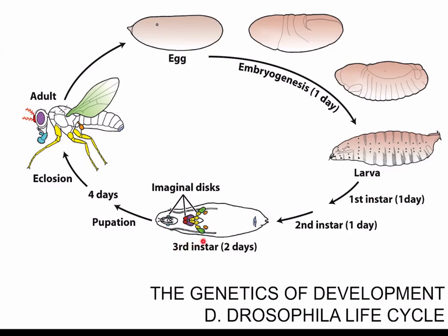Similarly, the third instar larva has disc tissues organized into discs called imaginal discs that give rise to particular appendages in the adult during pupation. Even though the larva would die in mutants for developmental genes, one can still look at both the patterns of the imaginal discs as well as what genes are expressed or not expressed in these imaginal discs to determine what appendage phenotype those particular genes control.